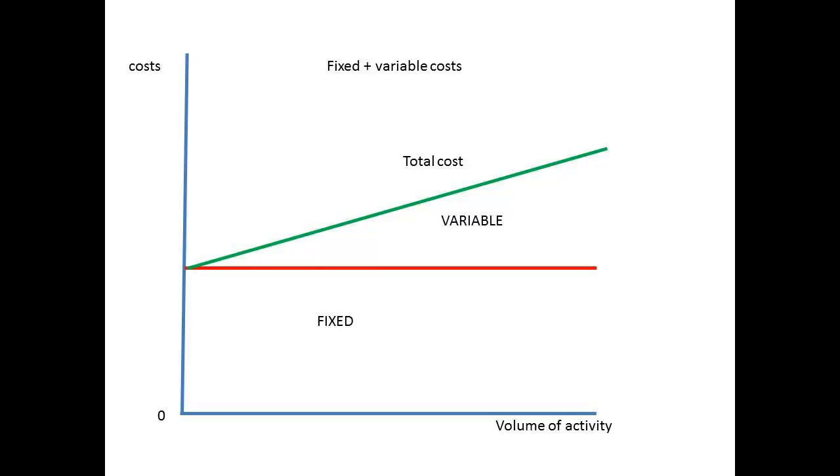This time we are going to add the variable costs. So we are starting our line for variable costs at the point where the fixed cost line meets the vertical axis. To make it clear, we have shaded in the rectangle to show the fixed cost element here. The shaded triangle shows the part of the total cost that is due to the variable costs.